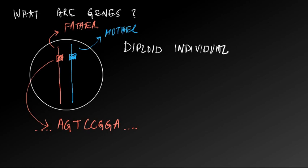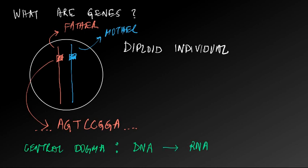Let's recall the central dogma, which says that this DNA is transcribed into RNA, and the RNA is translated into protein. And this protein determines phenotypes.